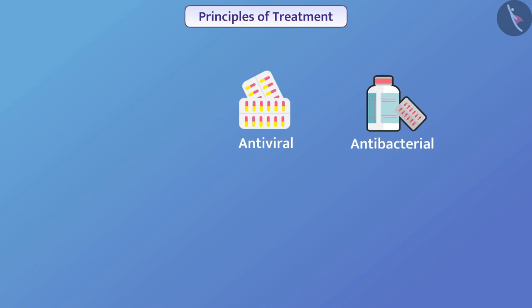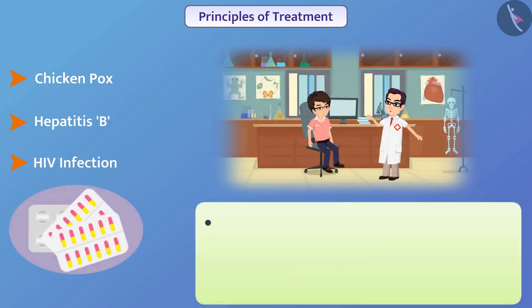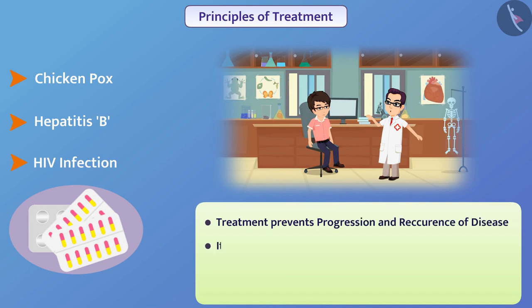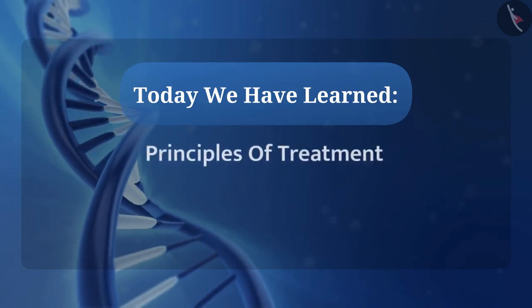Despite this, medicines to control chickenpox, hepatitis B and HIV infection have been manufactured. Treatment prevents progression and recurrence of disease. It reduces the mortality rate and improves the quality of life. However, we should take medicines as per doctor's advice and we should avoid self-medication. Today we have learned about the principles of treatment.